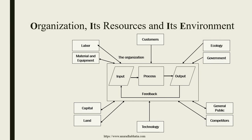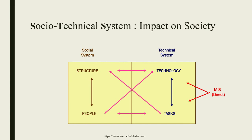Organization, its resources, and its environment — this loop feedback is shown with respect to the previous slide. What is the socio-technical impact, that is the impact on society? MIS has a social system and a technical system. The structure and the people, how they relate to the technology, is important. What tasks we do with the technology are related to the people, and these too are related directly to MIS.